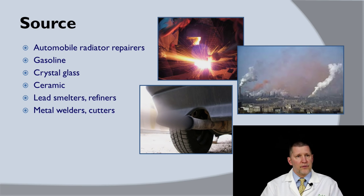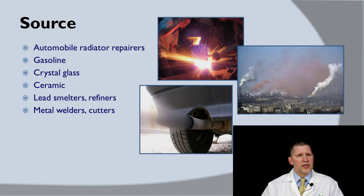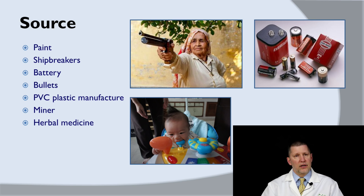Lead is still common in our environment. The most common situations in which people are exposed to lead is when they are repairing specific parts of automobiles, particularly radiators, and reclaiming lead from lead batteries in cars. Leaded fuels are still used some in the United States, though much less than they used to be. There is leaded crystal and glass and ceramic glazes. Lead smelters and refiners — any place where lead is heated — is a potential source of lead exposure to the workers and people around them. This includes mining and metallurgy. Metal welders and cutters can be exposed to lead. Lead is present in older paints; sometimes we see patients exposed to lead from paint when it breaks down into dust and flakes that people eat or inhale, or when people are remodeling and heating and scraping old paint to get it off. Ship breakers — people who take old ships and break them down into component parts for recycling — are often exposed to lead from welding, electronics, and paints from old ships.